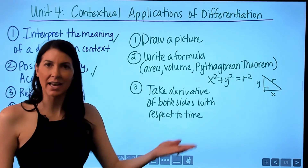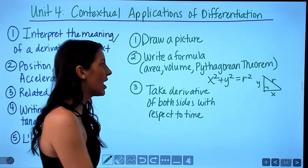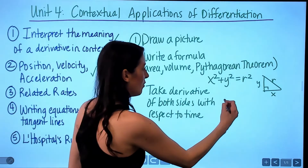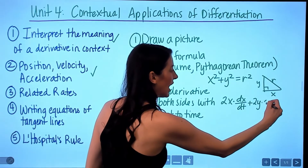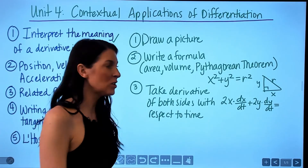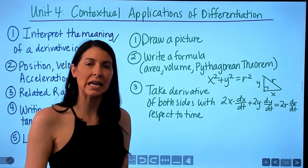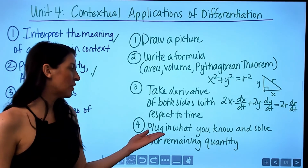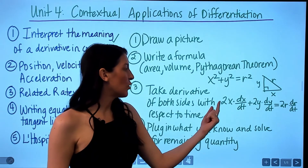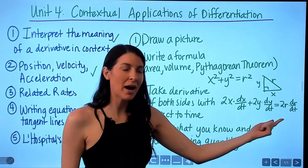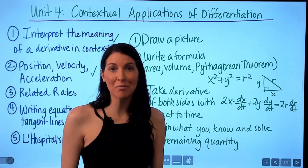In step three, take the derivative of both sides of your formula with respect to time — that's the key in related rates. For the Pythagorean theorem example: the derivative of x² gives 2x·(dx/dt), plus 2y·(dy/dt) equals 2r·(dr/dt). Remember the chain rule for each term. Finally, plug in what you know and solve for the remaining quantity to find the unknown rate.